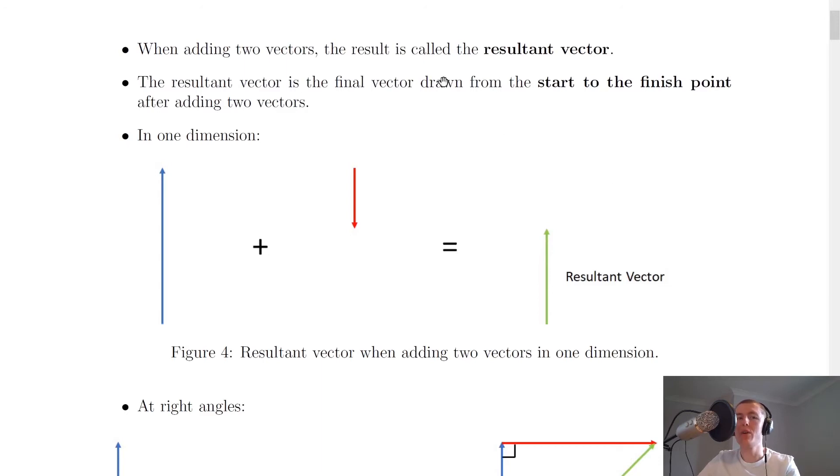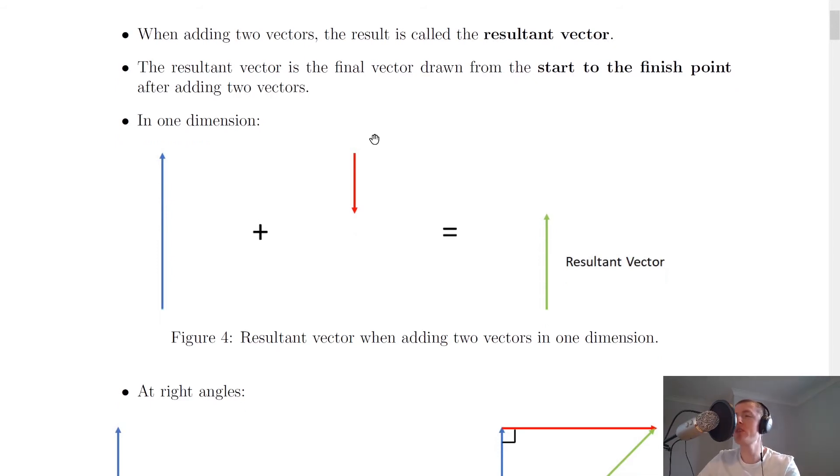Thinking about resultant vectors now, when adding two vectors together, the result is called the resultant vector. The resultant vector is the final vector drawn from the start to the finish point after adding the two vectors together. And you'll often see the resultant vector with two arrows on it, just to make it different from the other individual vectors.